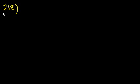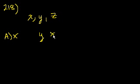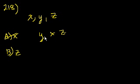We're on problem 218. Which of the following cannot be the median of the three positive integers x, y, and z? The median is the middle number. Choice A is x — that can be the median if the order is x, y, z. Choice B is z — no reason why z can't be the median; the order could be y, z, x. So it's not A or B.